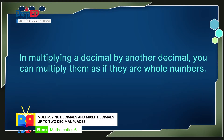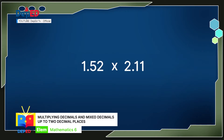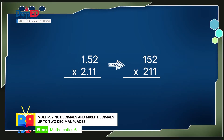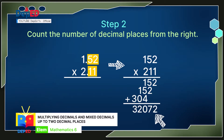In multiplying a decimal by another decimal, you can multiply them as if they are whole numbers. In placing the decimal point in the product, get the sum of the number of decimal places in each factor. Let's try this example: 1.52 times 2.11. Step 1: Multiply as whole numbers — ignore the decimal points. 152 times 211. Step 2: Place the decimal point in the product based on the total number of decimal places in the given factors. Count from the right — in this case, we have 4 decimal places. So, 1.52 times 2.11 equals 3.2072.